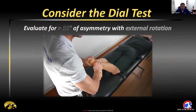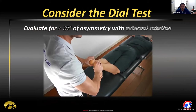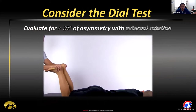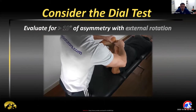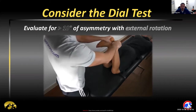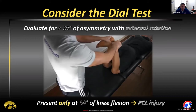Another way to assess the PCL is the dial test, which gives good information on the PCL as well as the posterior lateral corner. Do this at both 30 degrees and 90 degrees of knee flexion with the patient supine, looking for more than 10 degrees of rotation of the injured leg versus the non-injured leg. If you only see this at 30 degrees, the PCL is injured. If present at both 30 and 90 degrees, you should have higher concern for a posterior lateral corner injury — that makes the injury more significant.